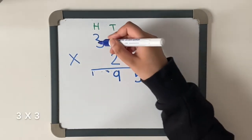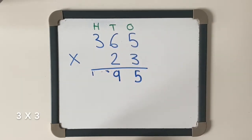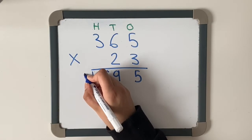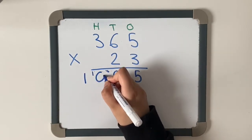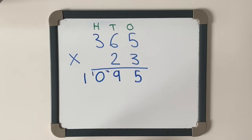Now all that's left is three times three. Three times three is nine, add the one which is ten. I'm going to put my one in the thousands column and my zero in the hundreds column. So far we've got 1,095, but we haven't finished just yet because we still need